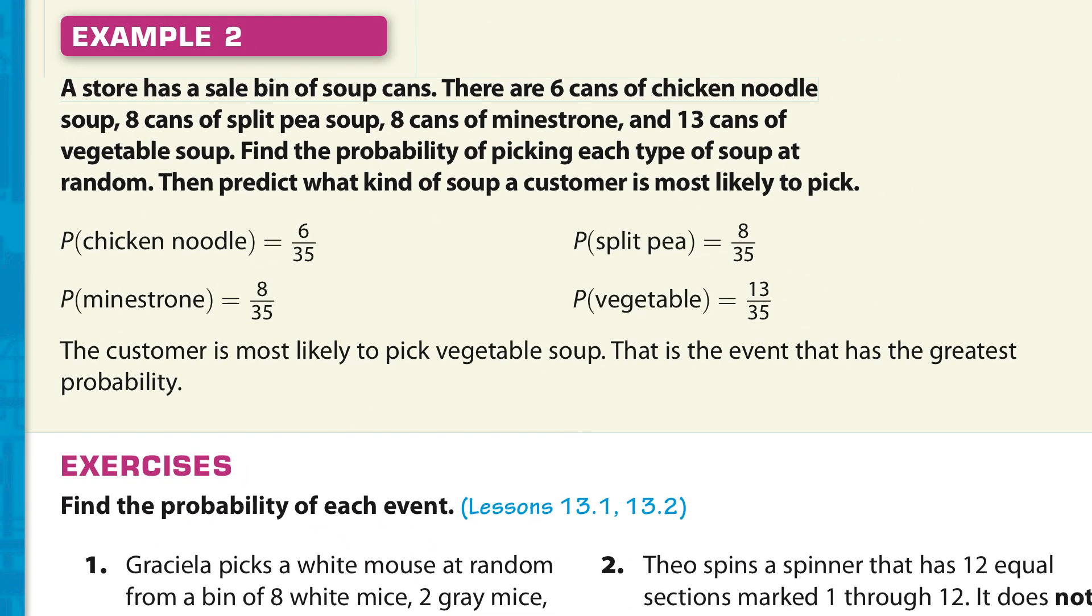What we have here is a second example. A store has a sale bin of soup cans. There are 6 cans of chicken noodle soup, 8 cans of split pea, 8 cans of minestrone, and 13 cans of vegetable soup. Find the probability of picking each type of soup at random. If you add up 6 and 8 and 8 and 13, you should get 35. Probability of chicken noodle is 6 out of 35, then 8 out of 35 for split pea, another 8 for minestrone, and 13 of vegetable soup. So, what's the most probability? Well, it would be vegetable soup because it's 13 out of 35.